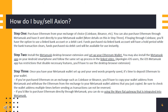How do I buy and sell Axion? Step 1: Purchase Ethereum from your exchange of choice — Coinbase, Binance, etc. You can also purchase Ethereum through Metamask and have it sent directly to your Metamask wallet. If buying through Coinbase, you'll have the option to use a linked bank account or a debit card. Funds purchased via linked bank account will have a hold period while the bank transaction clears, while funds purchased via debit card will be available for use instantly.